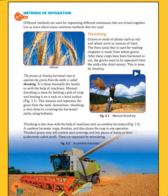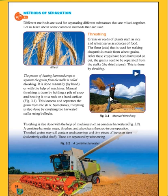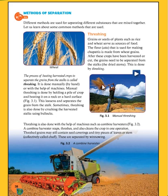Manual threshing is done by holding a pile of crop and beating it on a rock or a hard surface. As you can see in this picture, the man is beating the piles on the hard surface to separate the grains from the stalks. This loosens and separates the grain from the stalk.